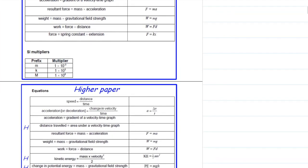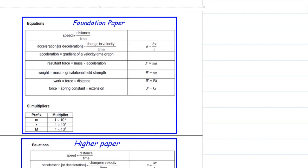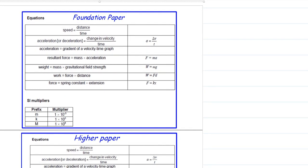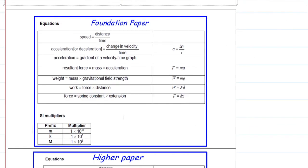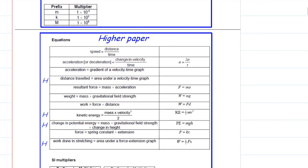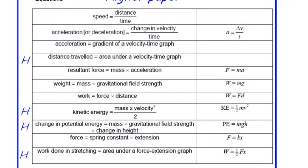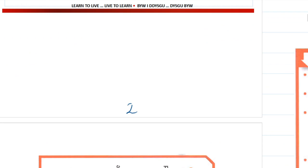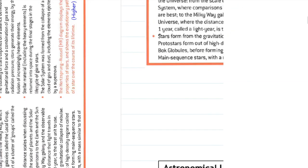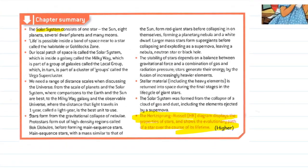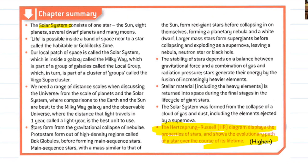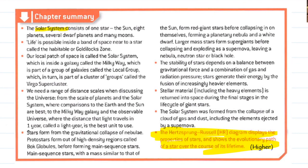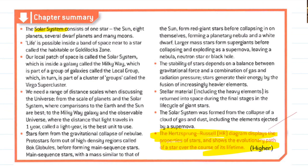As always, first page in the booklet gives you the equations and any SI multipliers, standard international multipliers, for foundation and for higher. There are no equations or additional equations that you need to be learning for this topic, but they're always useful to have there. Close the gap marking as always and the chapter summary on page three, and the chapter summary is pretty much everything that you need to know and learn.